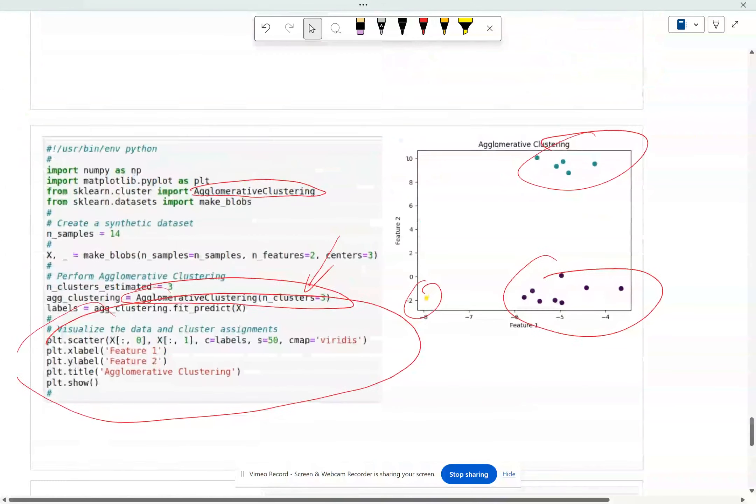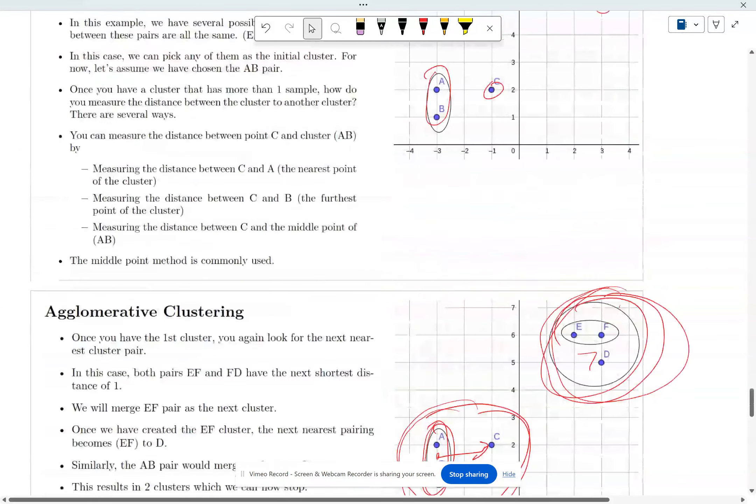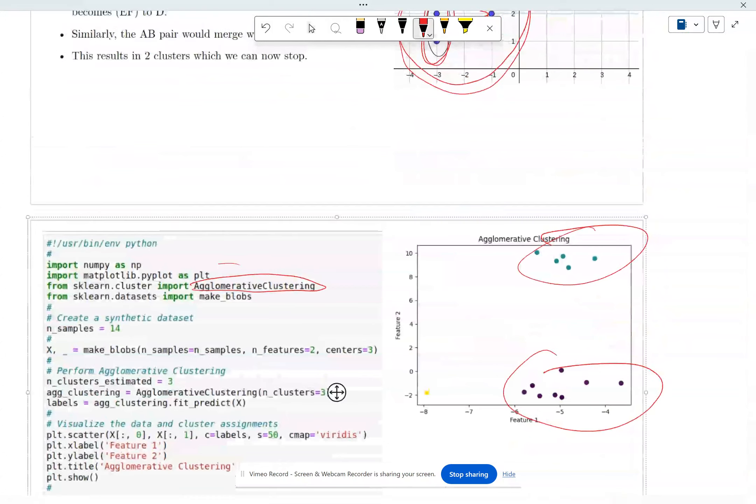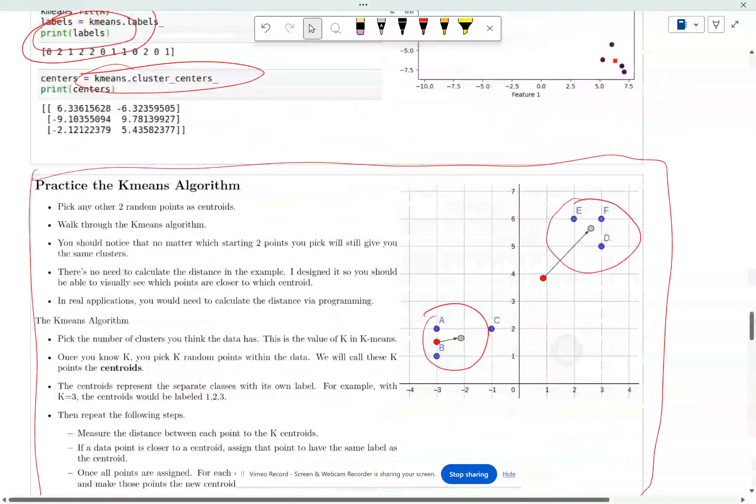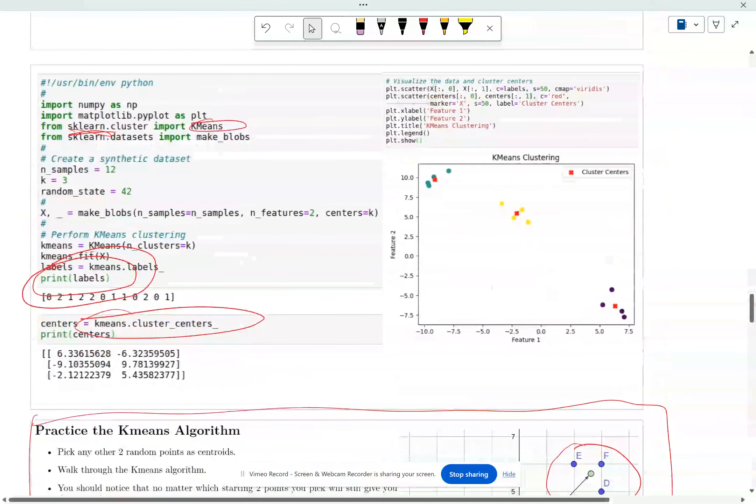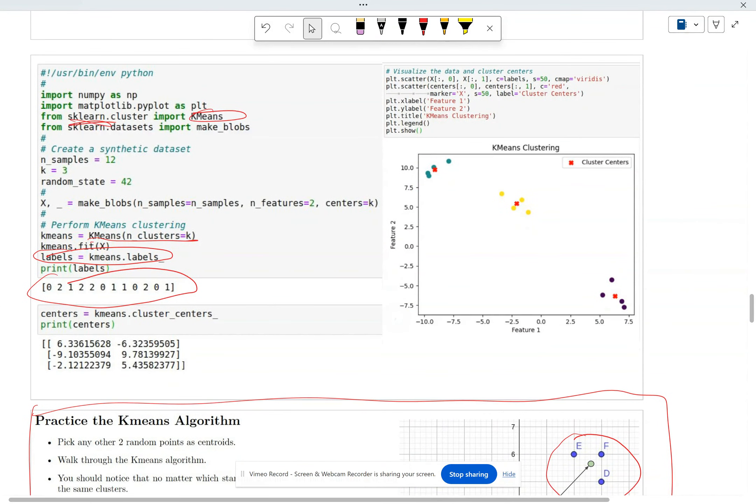Now, once you have the results, once you have the clustering results, whether it's agglomerative or it's k-means, notice how after you run k-means, you can get the labels out, which looks like this. So there are three clusters. It gives you the labels and it tells you the center of each one of the cluster. So here's the label.